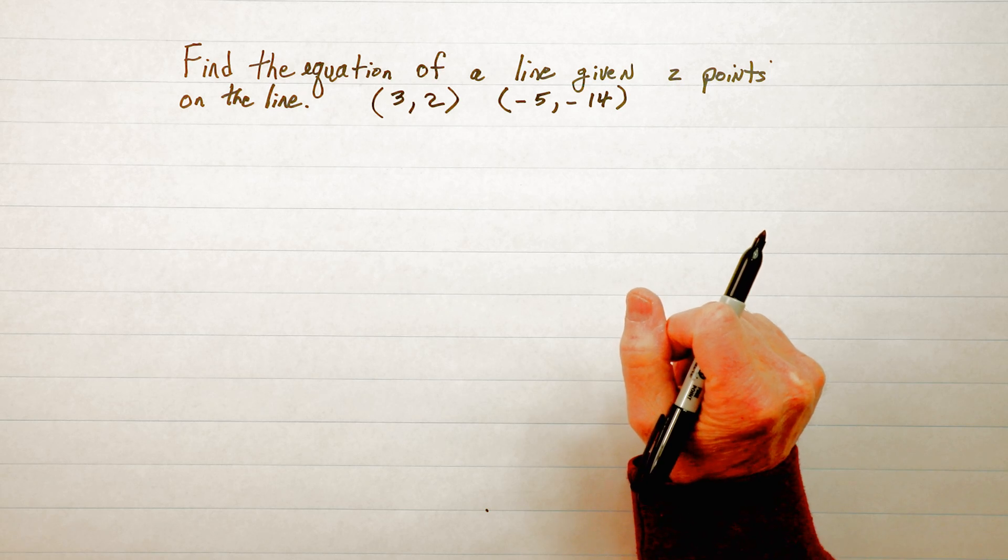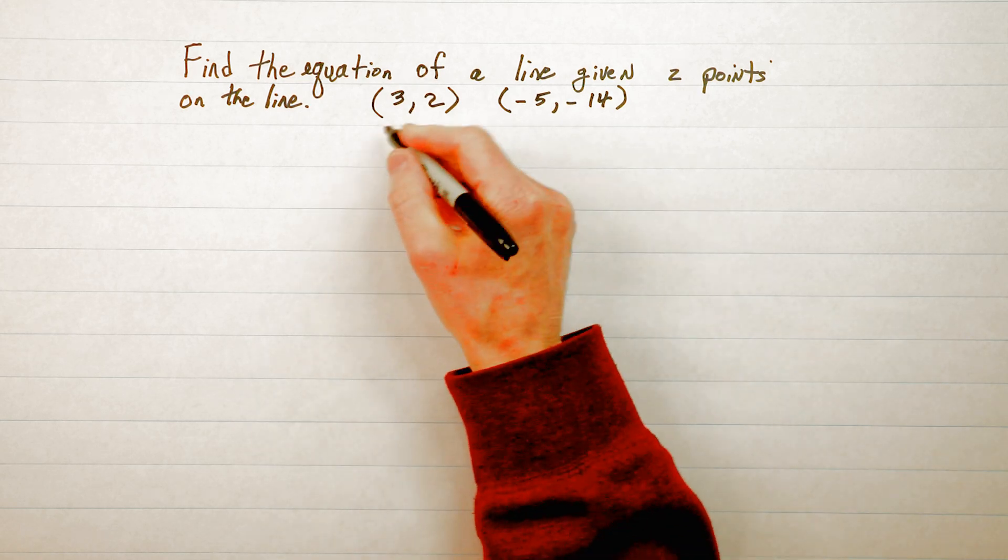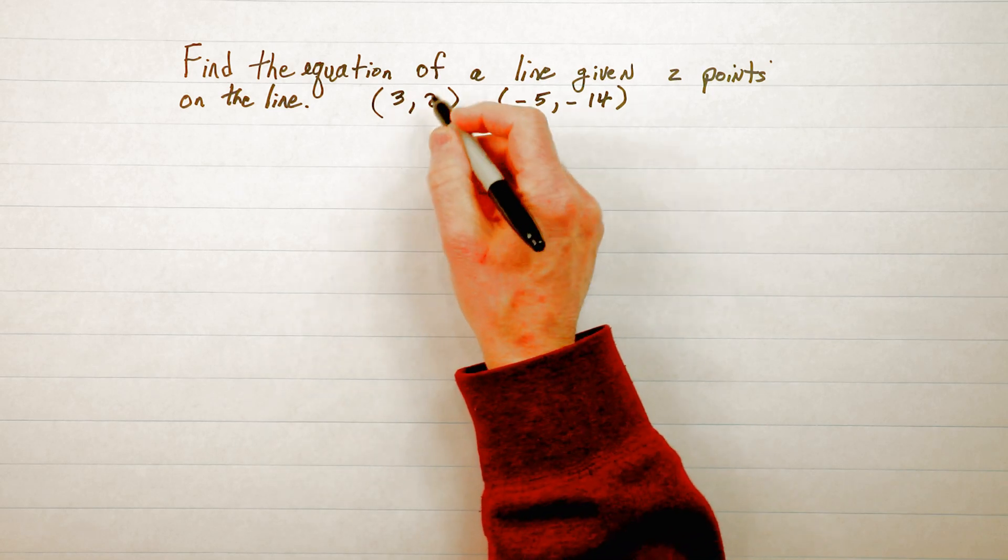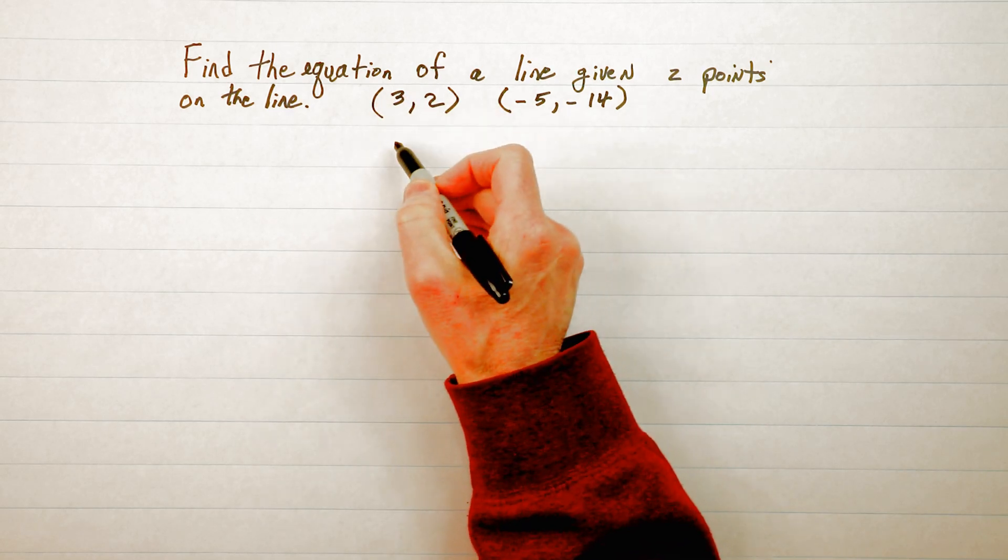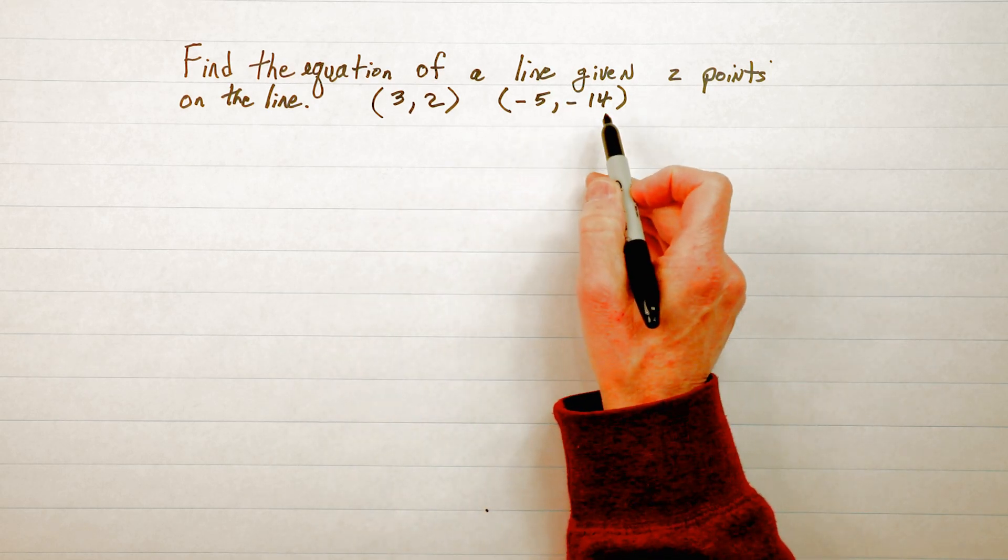Now I find it's important when you're starting out doing this to name the points. What I mean by that is this point (3, 2) is the first point, (-5, -14) is the second point.